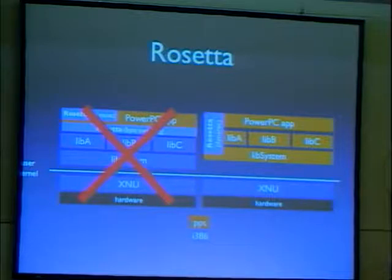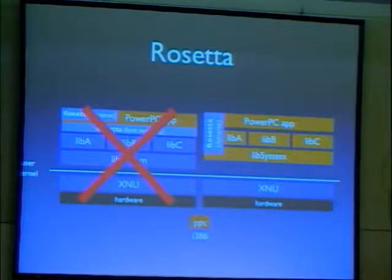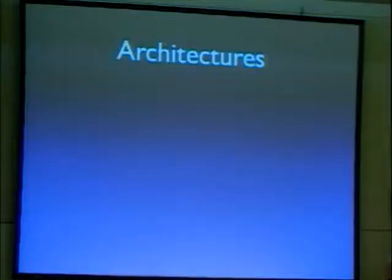The downside of this approach is that it's slower. For example, if a PowerPC application uses the QuickTime library, the movie decoder will run in a translated fashion even though it's available natively on the system. You can experiment by running the PowerPC version of a universal binary explicitly using '/usr/libexec/oah/translate' and you'll see it's slower.